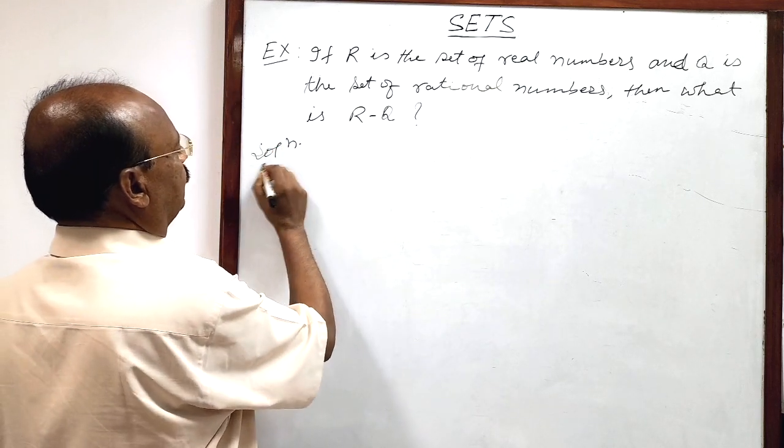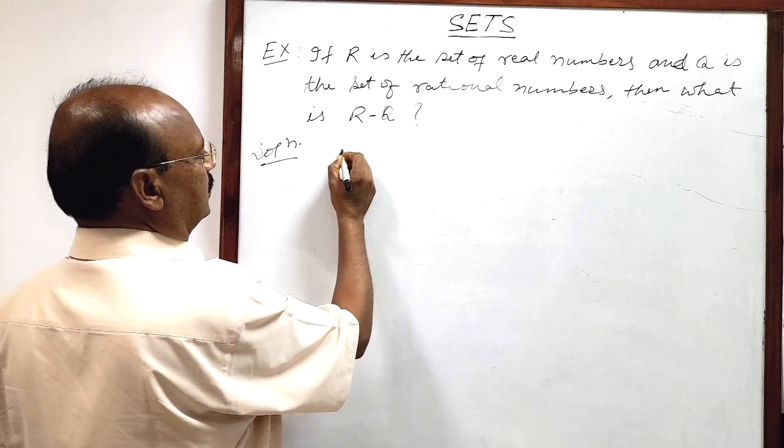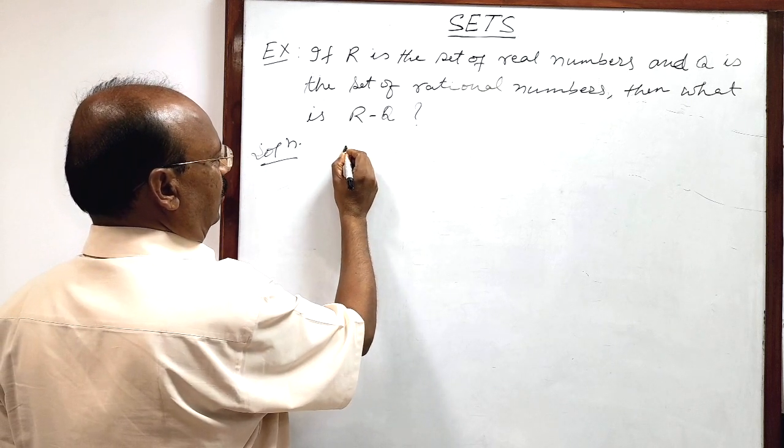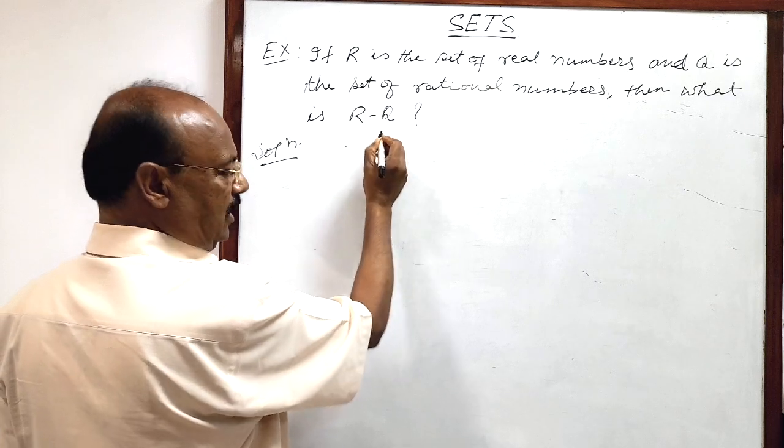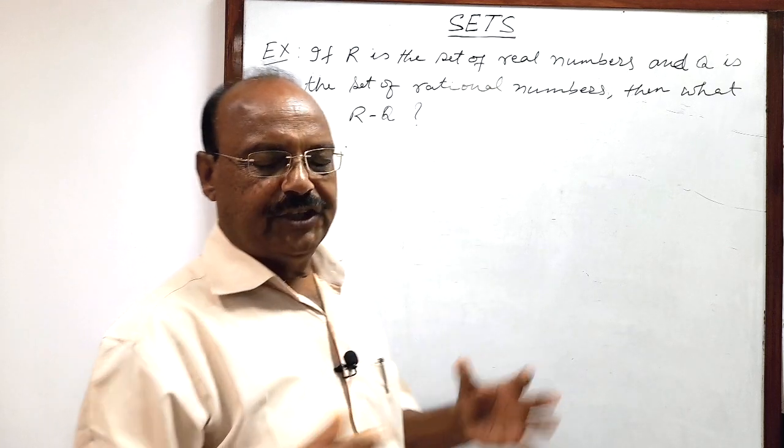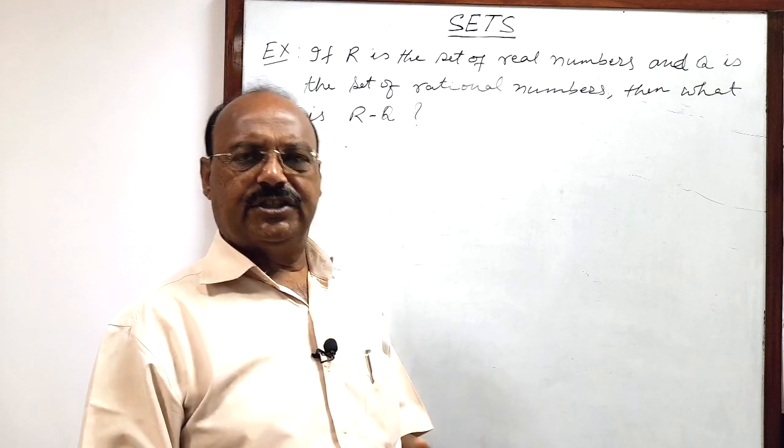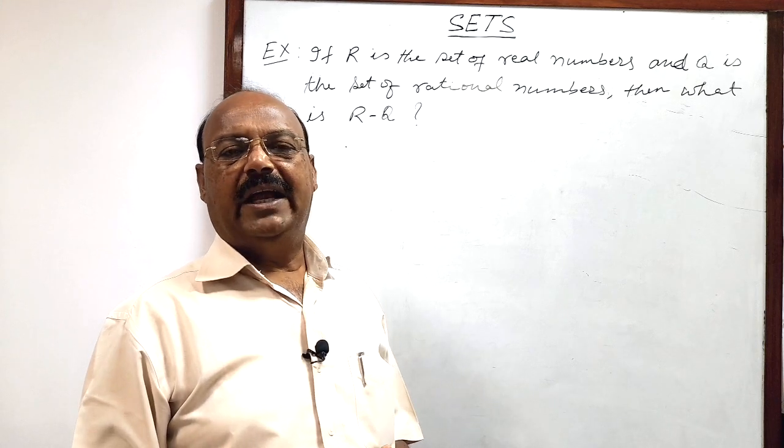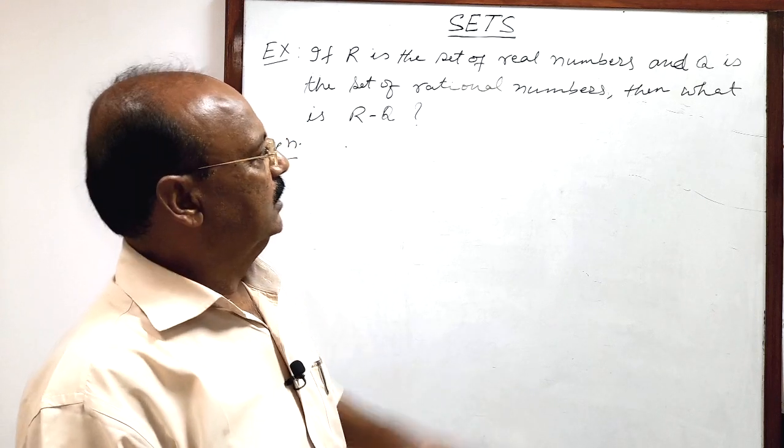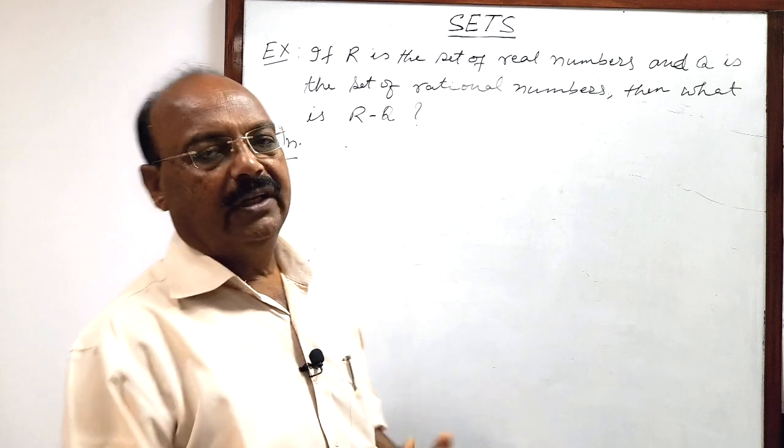As we know here all real numbers are collection of rational numbers as well as irrational numbers. Here Q is the set of rational numbers.